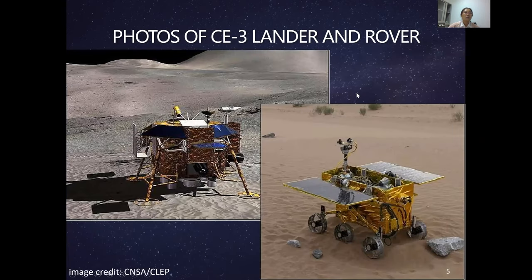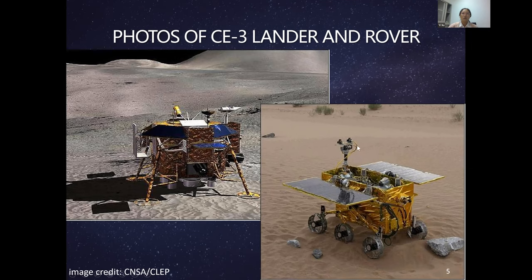The Chang'e 3 lander has a mass of 1,200 kg and its landing leg span is about 4.7 meters. The Yutu rover has a mass of 120 kg and features a stereo camera, navigation cameras, and a communication antenna to send data back to Earth. The rover stands about 1.5 meters tall and uses solar panels to generate electrical power, operating for two weeks then charging its battery to survive the long lunar night.